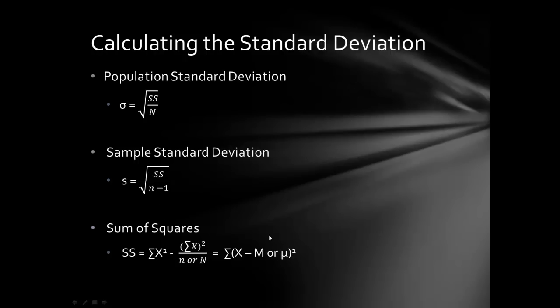So the standard deviation essentially tells you the average distance or spread of scores in your data set relative to the mean. We divide the sum of squares by how many scores we have to get an average, then take the square root to reverse the fact that those deviations were squared in the first place.